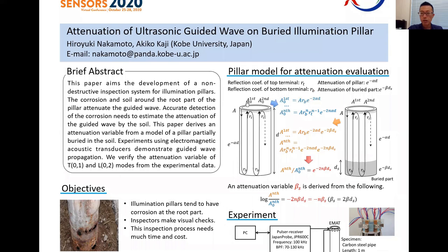Now, using the pillar model, we expressed an amplitude of the reflection waves. The parameters are here. A is the initial amplitude of the generated wave, and A first zero is the amplitude of the first reflection wave.